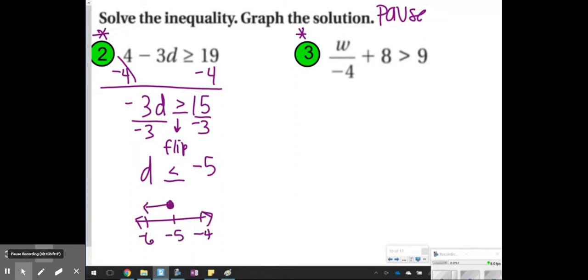For number 3, again, I'm going to subtract 8 first. So I have w over negative 4 is greater than 1. Since I'm going to have to multiply by a negative 4 on both sides, I'm going to flip my inequality symbol to be less than. So w will be less than negative 4.